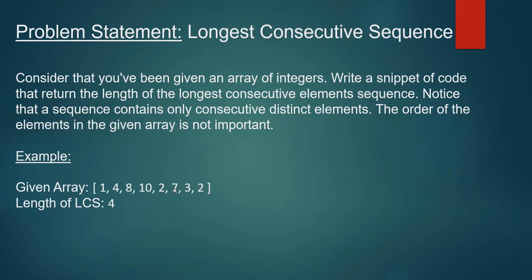We can also notice another consecutive sequence, seven and eight, in this array. But it is of length two, and since we need to find the longest consecutive sequence, we need to return four for the values one, two, three, and four for this array. So now let's see how to solve this problem.